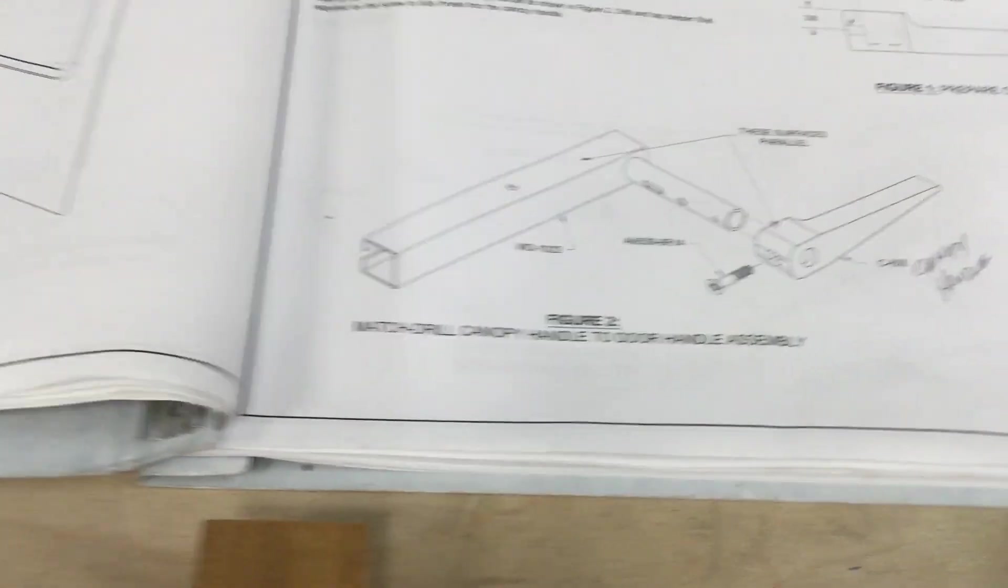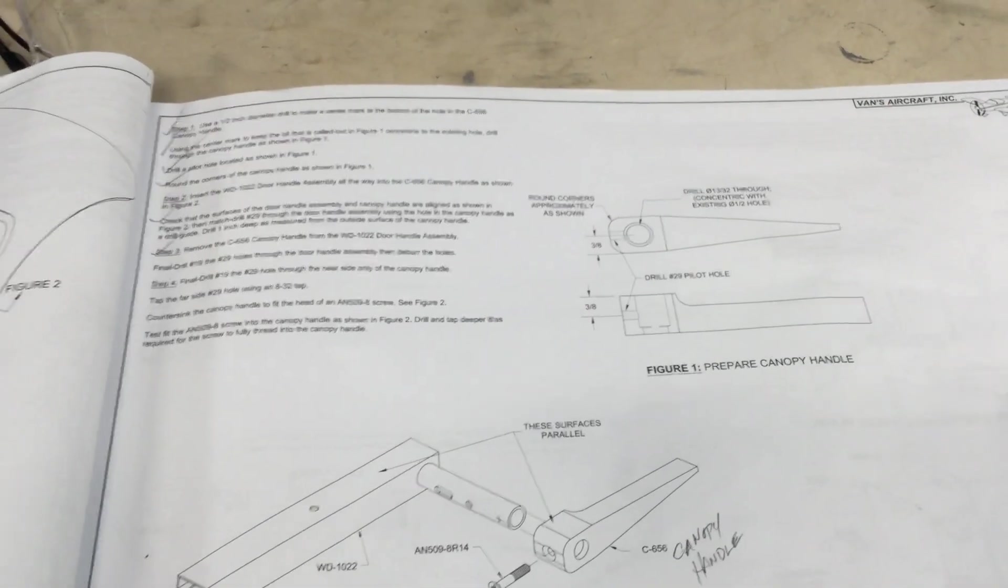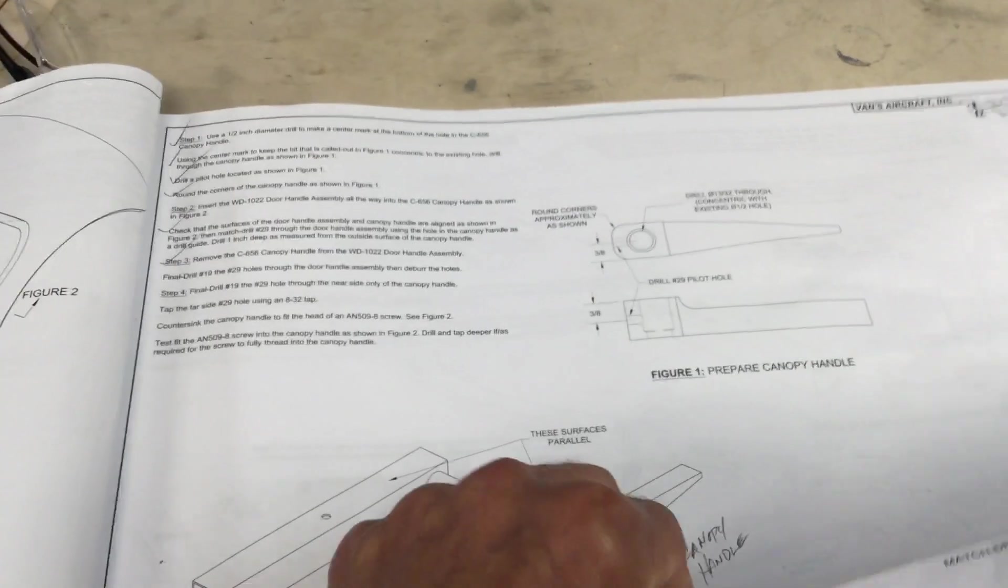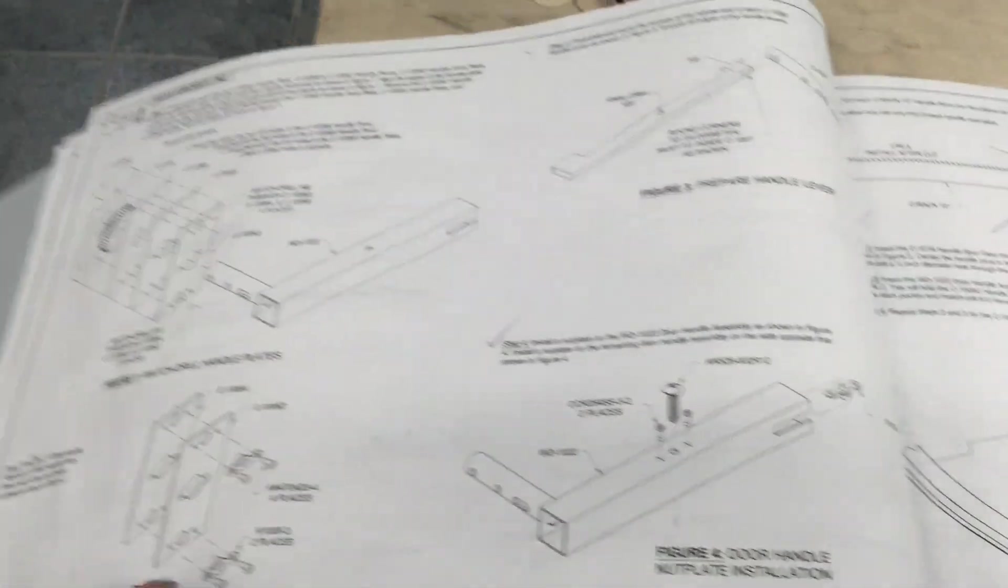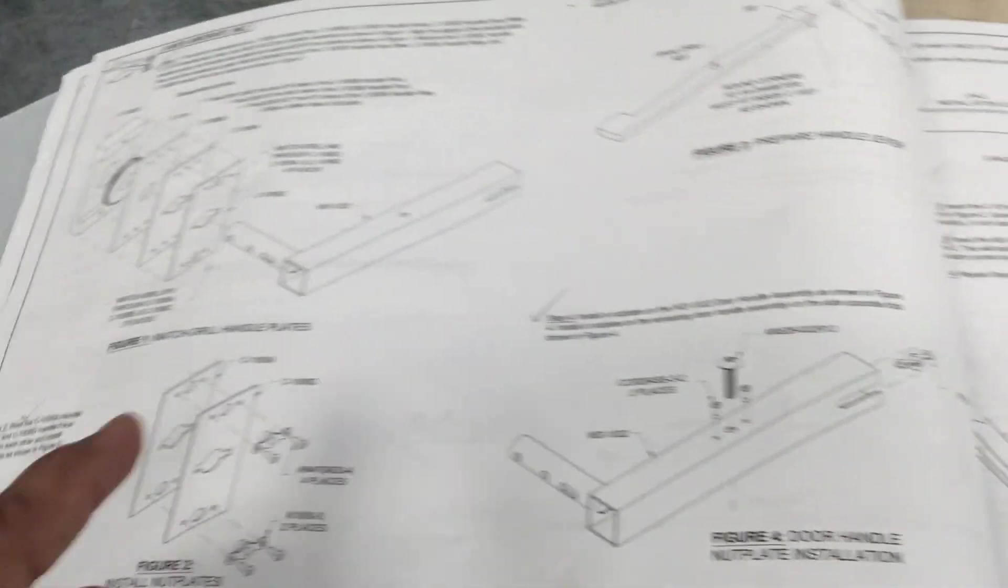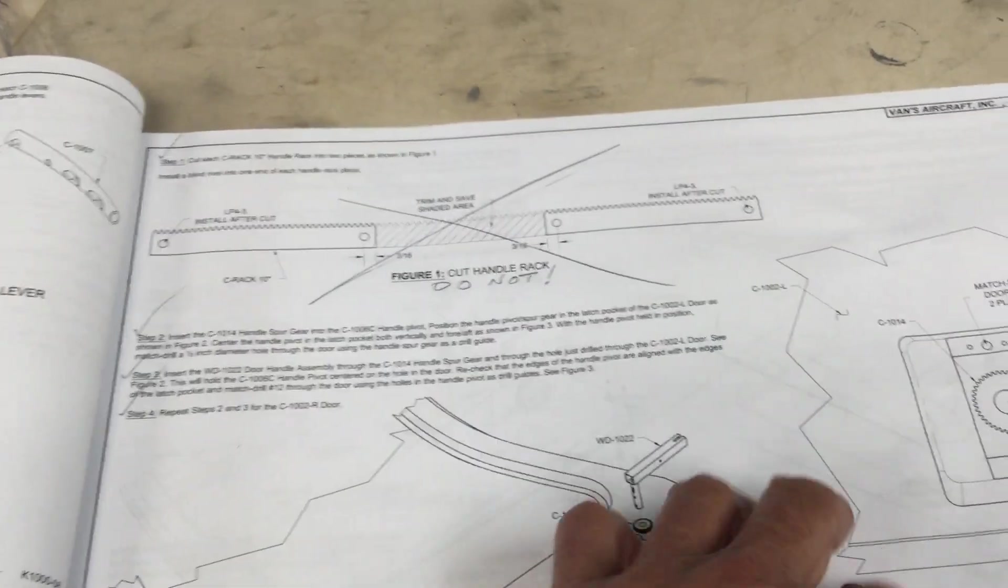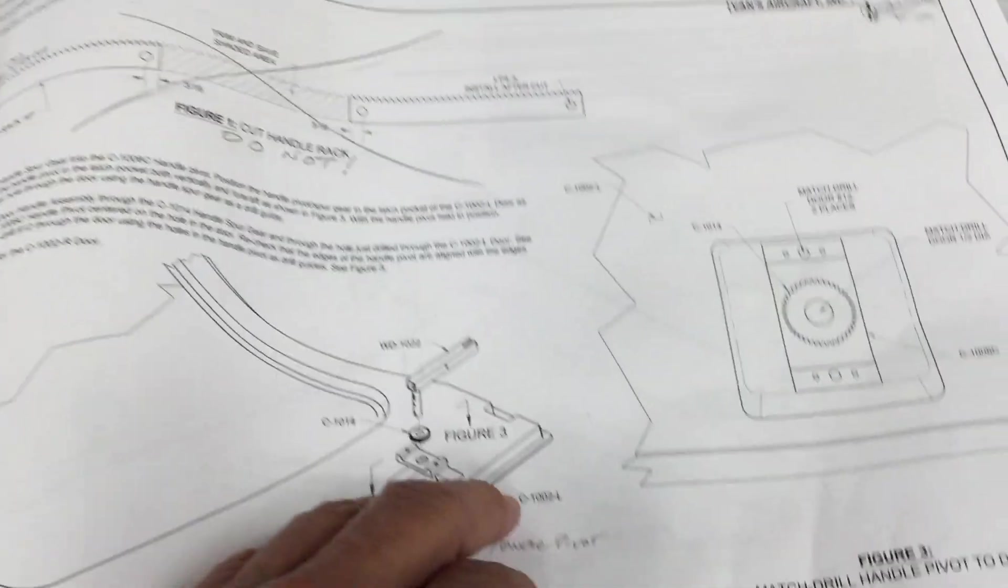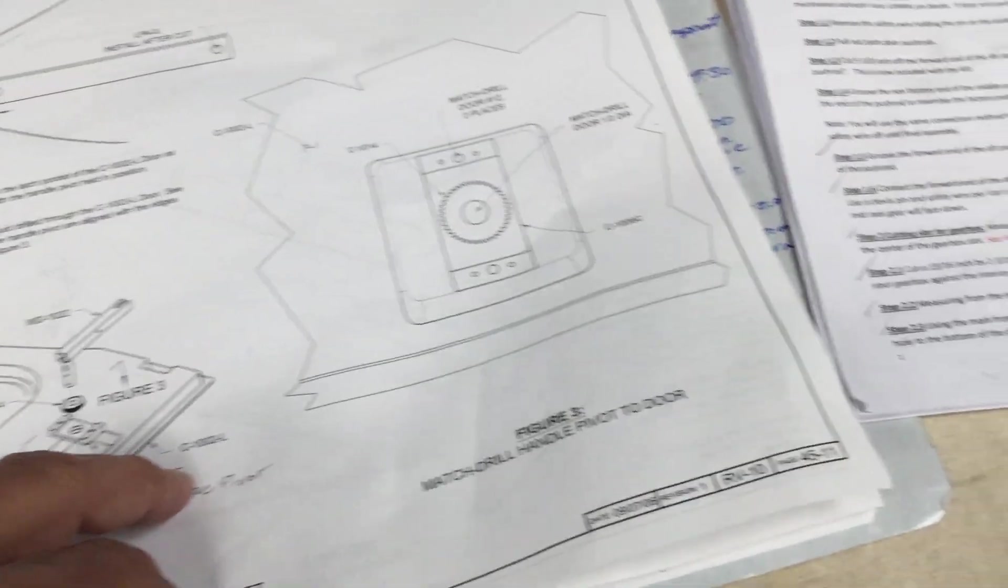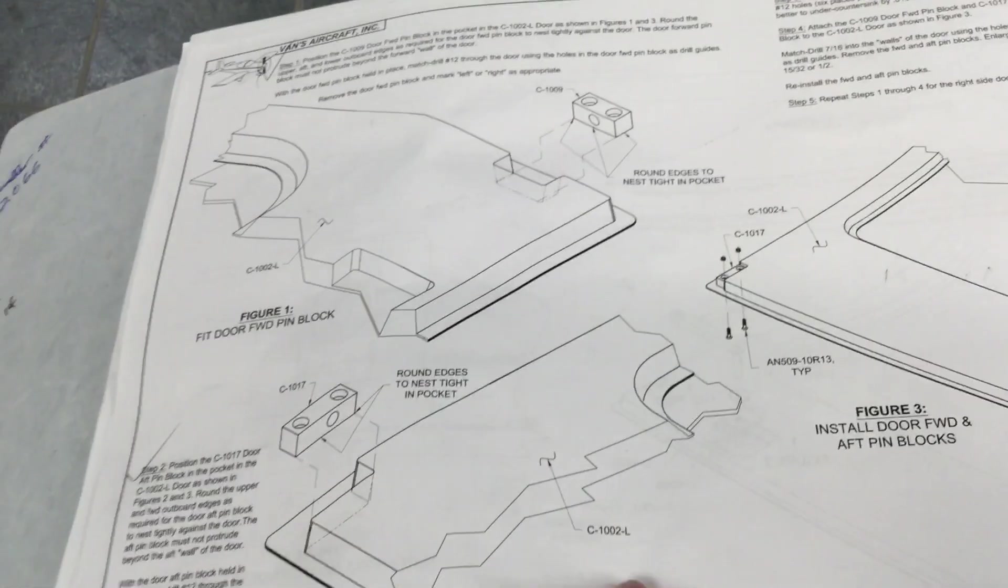You actually start on page 4509 and follow Van's instructions on building the door handle. Likewise 4510. Follow Van's instructions here on 4511. Don't follow the instructions. Don't cut that rack and finish up on 4511 and then 4512.